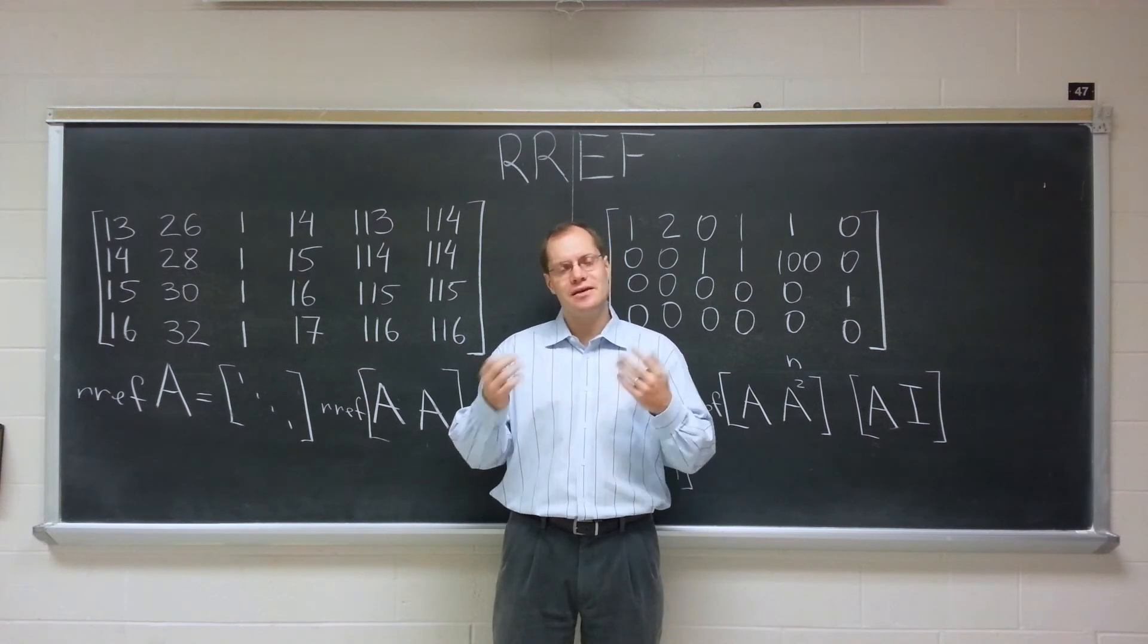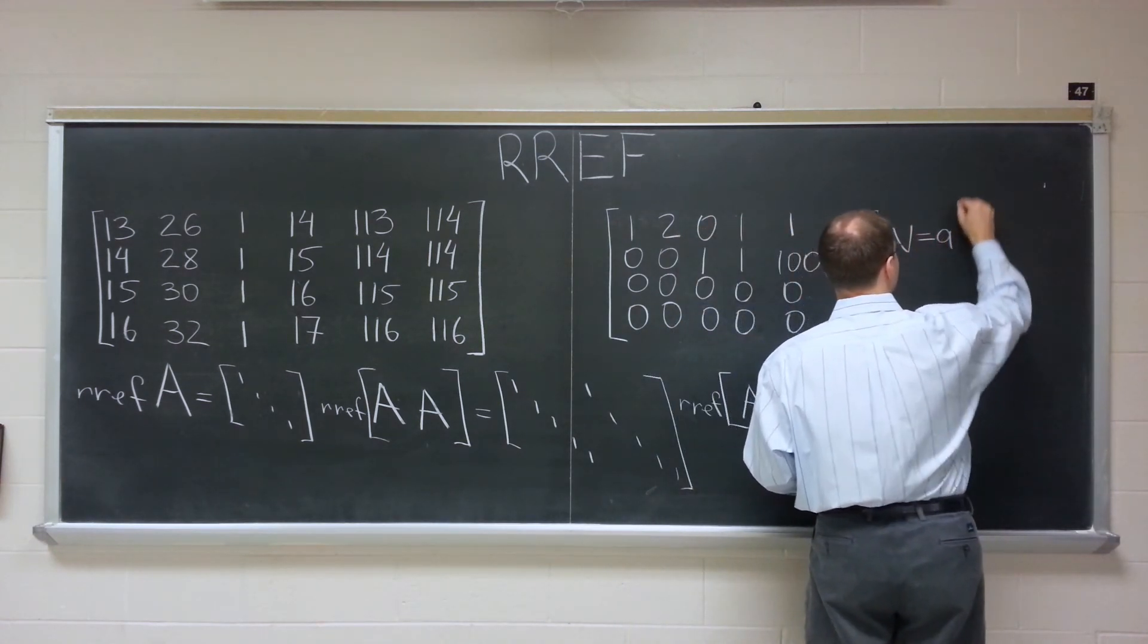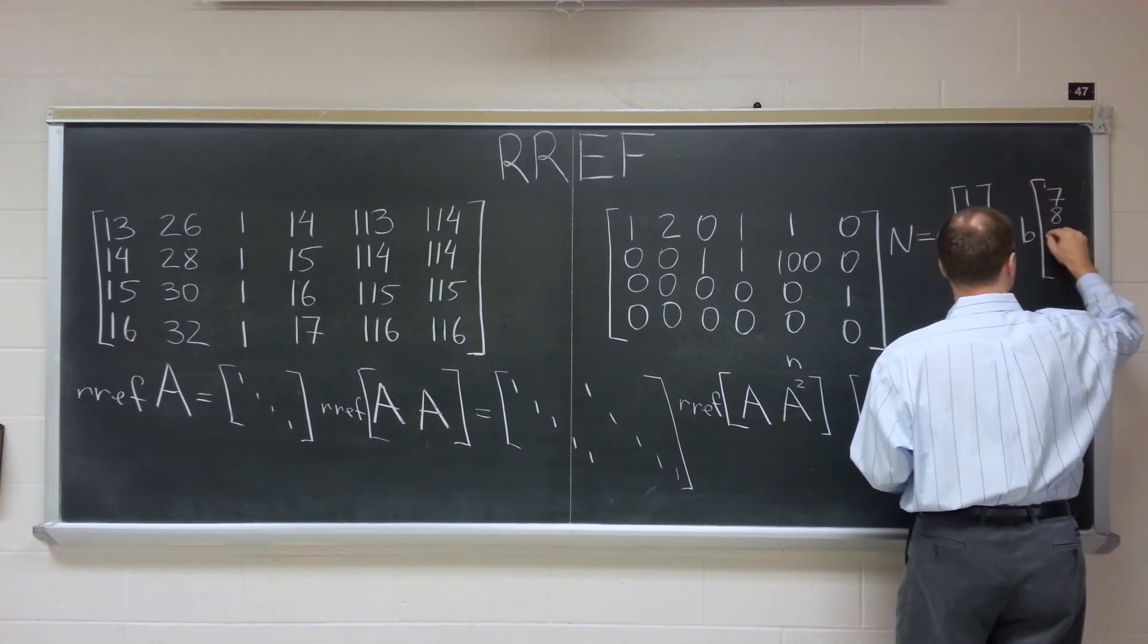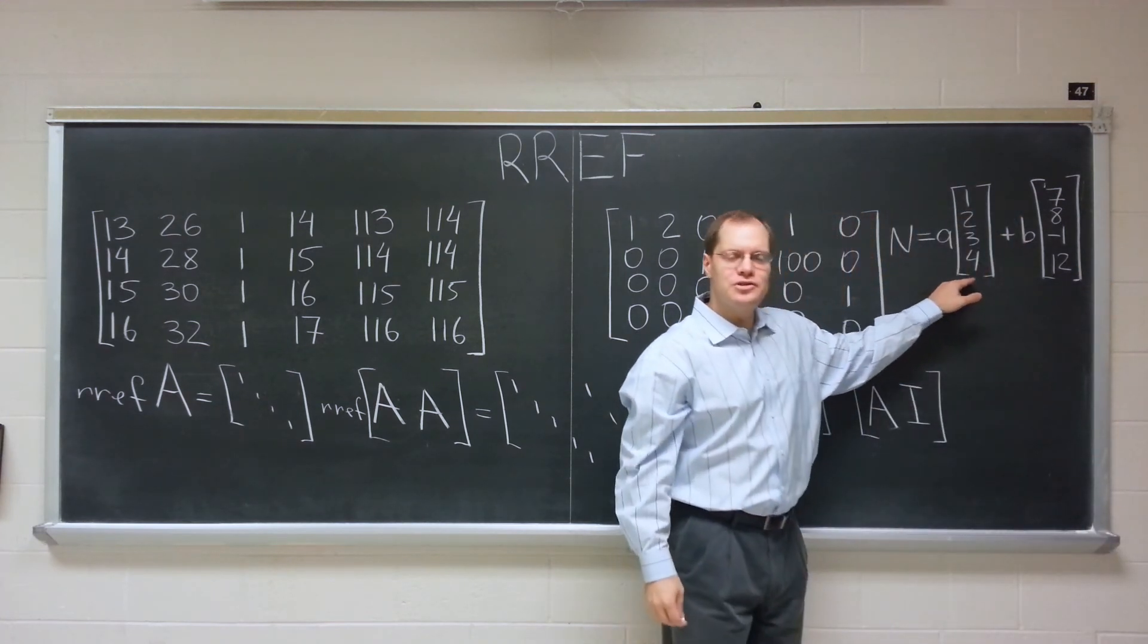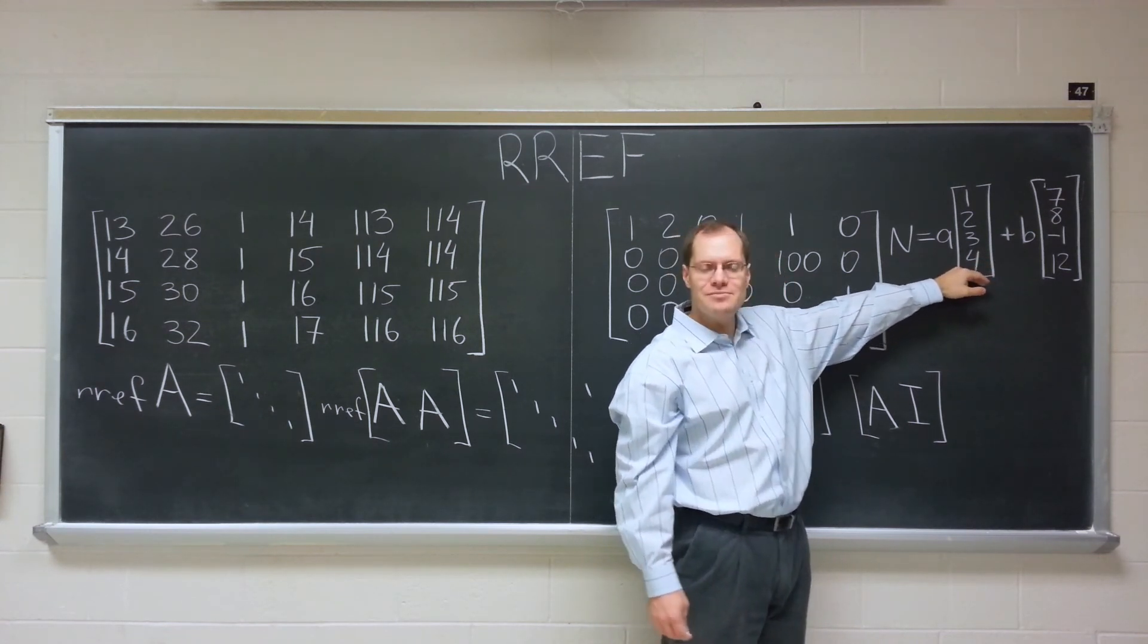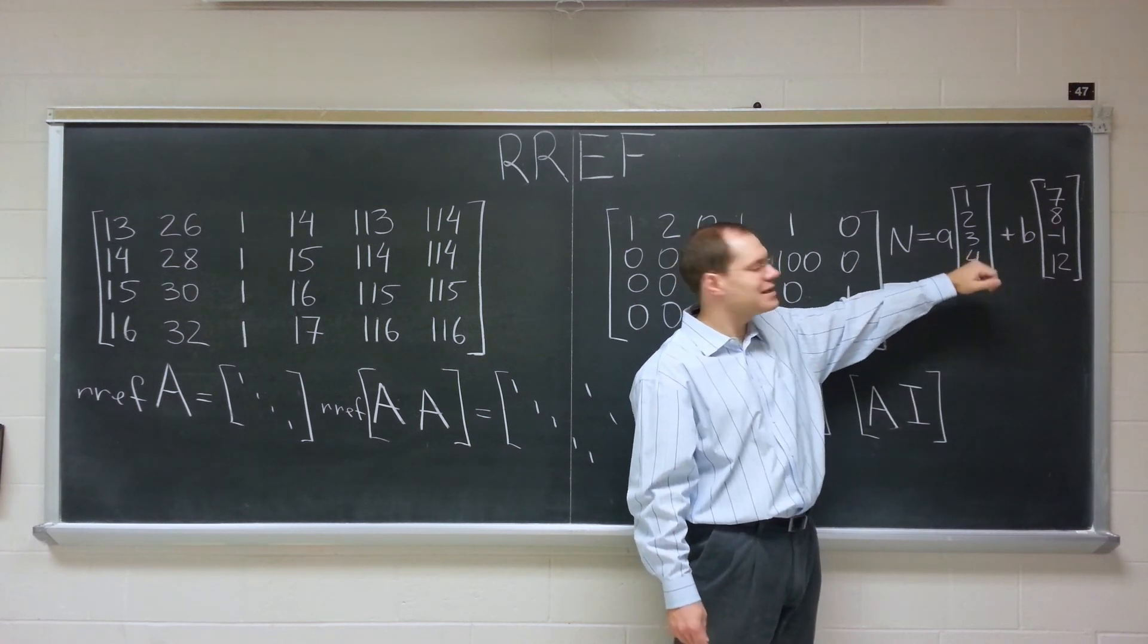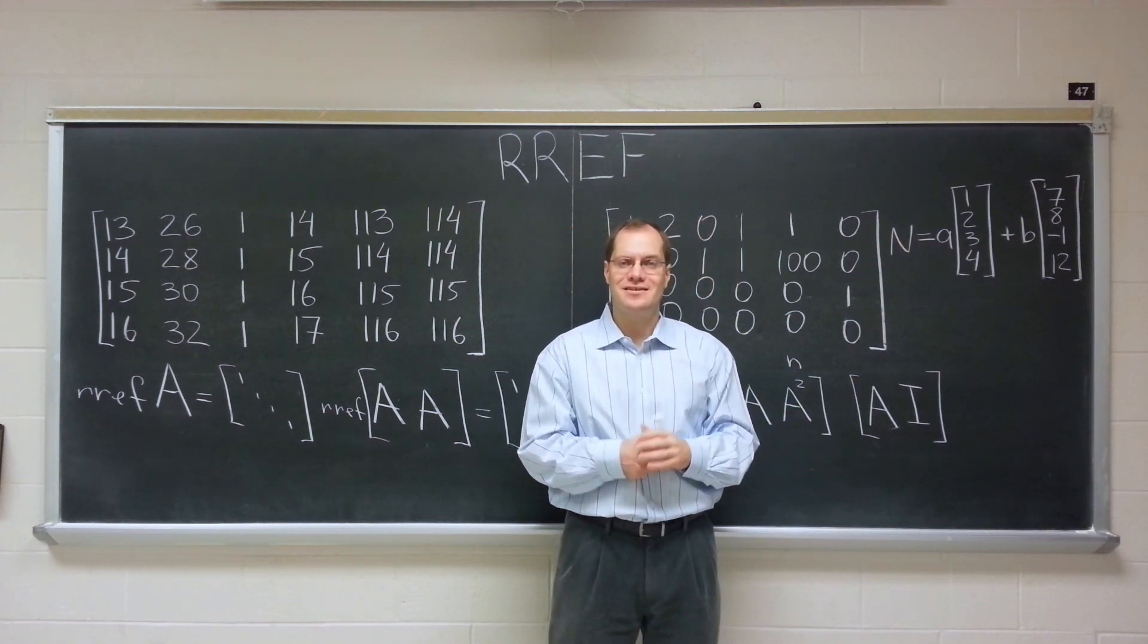If the null space is given in terms of some arbitrary basis. So, for example, suppose that the null space looks like this: A, 1, 2, 3, 4, plus B, 7, 8, minus 1, 12. And the question is, what is the row reduced echelon form of the matrix for which this is the null space? Now, you know that this matrix has 4 columns. You don't know how many rows it has. So, let's say it has 3 rows or 5 rows. It doesn't matter. So, for any given number of rows, what is the row reduced echelon form of the matrix that has this null space? This question actually has an answer that's not at all complicated. And thinking about it is truly enjoyable.